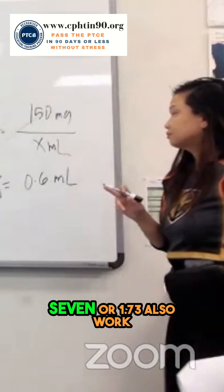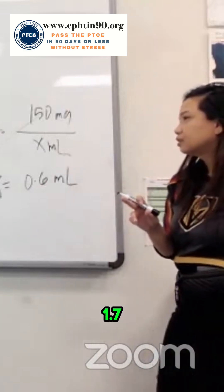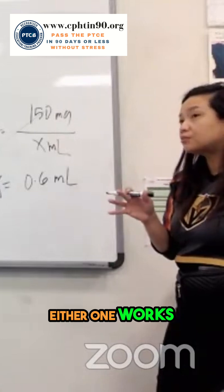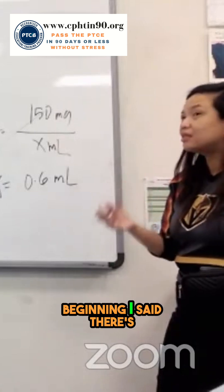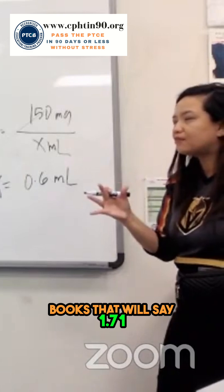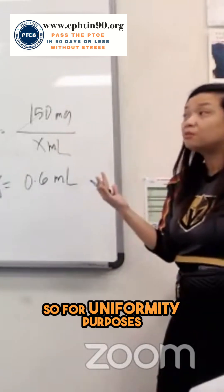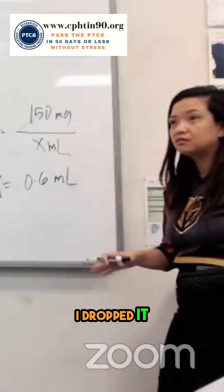Will 0.7 or 1.73 also work or should we try to say 1.7? Either one works, but remember at the beginning I said there's 1.71 books. Books, they'll say 1.71. There are books, they'll say 1.73. So for uniformity purposes, I dropped it. Okay.